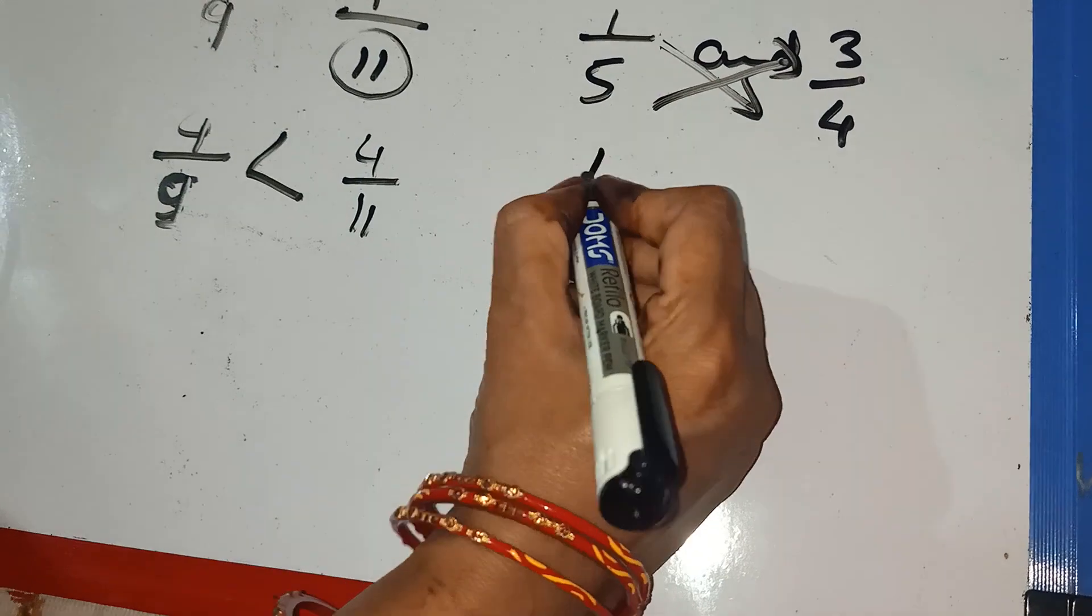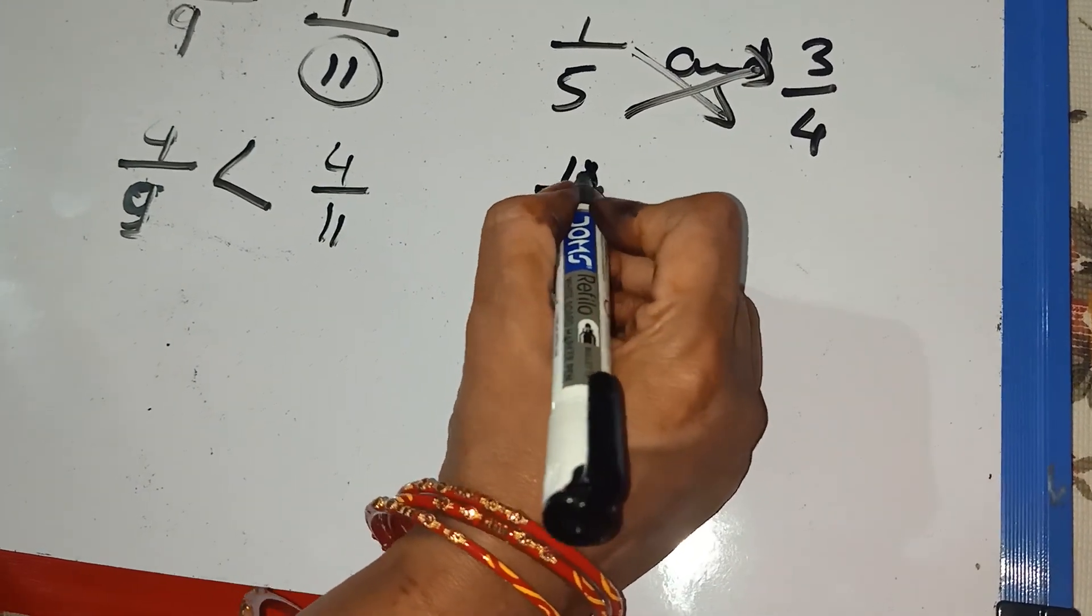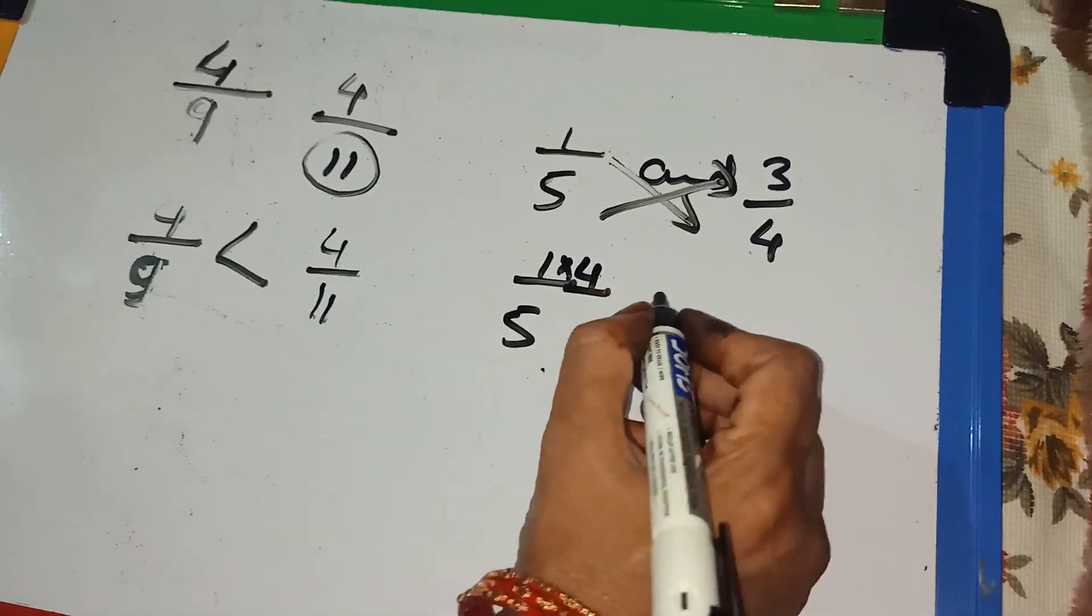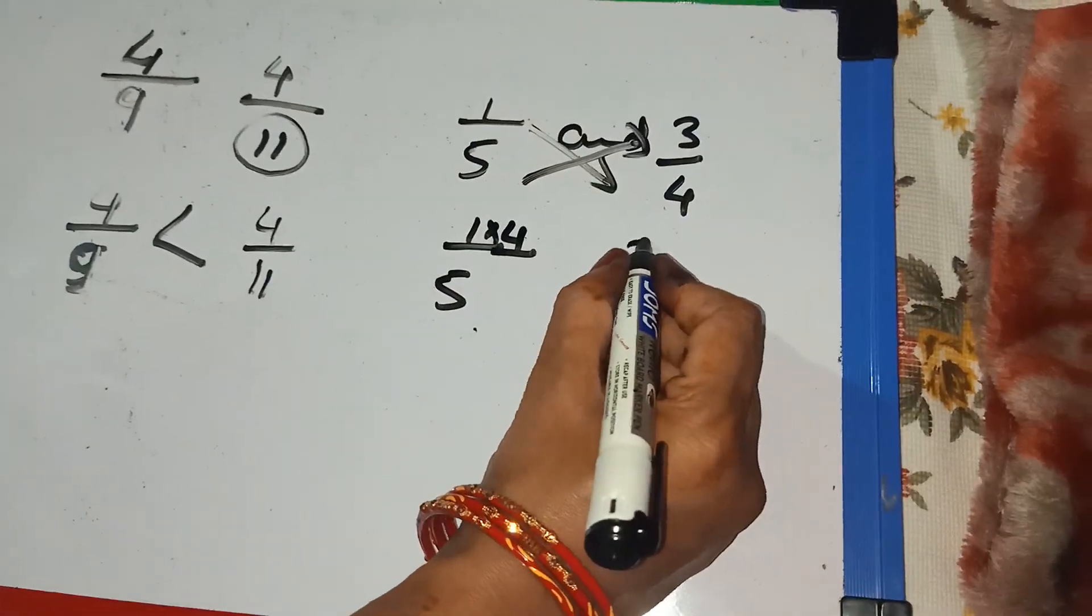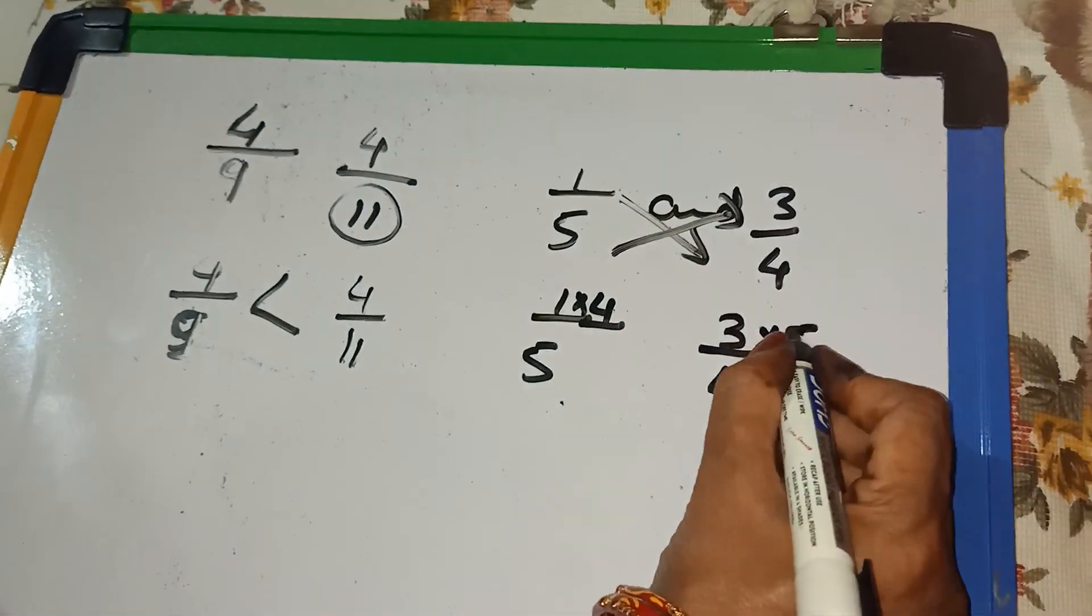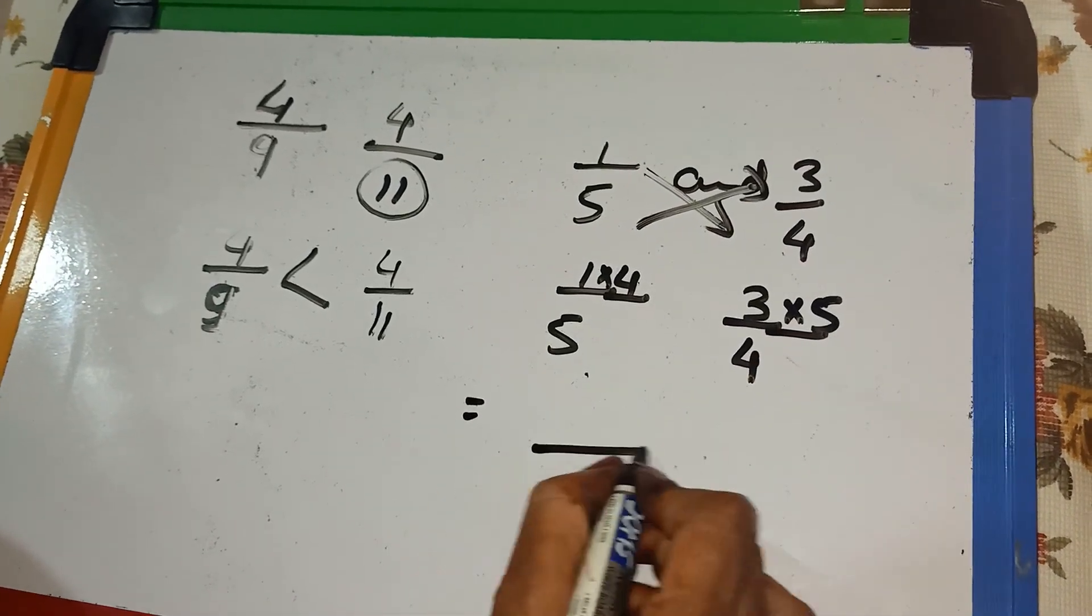So, 1 by 5 multiplied by 4. And 3 by 4 multiplied by 5.